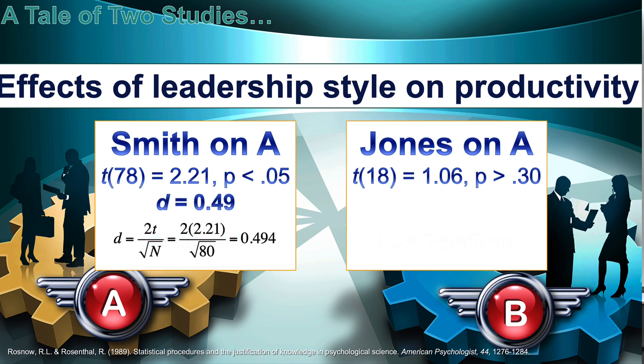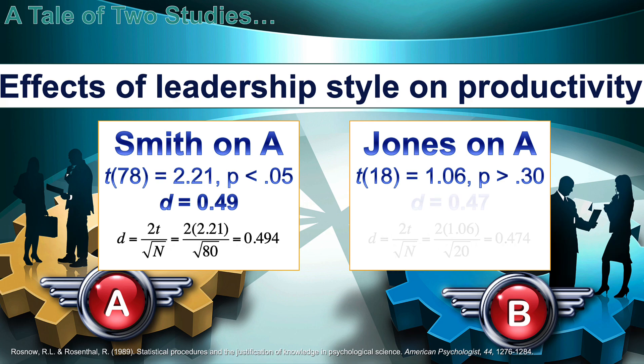If we convert the t-test from Smith's original study into an effect size, we find that Cohen's d is .49 — Cohen's conventions would consider this a medium effect size. As for Jones's replication, we likewise convert his t-test into an effect size and find a Cohen's d of .47, slightly below the convention for a medium effect size. Essentially, these two studies are measuring exactly the same thing.